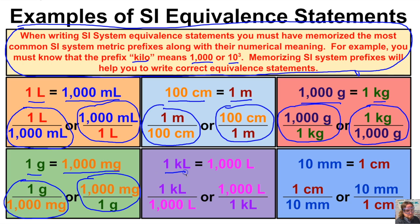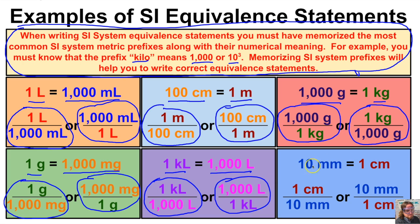One kiloliter equals one thousand liters — the prefix kilo means a thousand, so there are one thousand liters in one kiloliter. We can express this as one kiloliter over one thousand liters or one thousand liters over one kiloliter. Last but not least, there are ten millimeters in one centimeter. We can express this as one centimeter over ten millimeters or ten millimeters over one centimeter. That's how we write metric system equivalence statements.